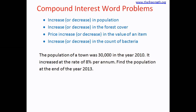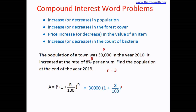So this is a good example of the application of the compound interest formula. The formula is: A equals P multiplied by (1 plus R over 100) to the power of N. Now looking at the problem, P is 30,000, R is 8, and N is 3 because we want to find the population at the end of 2013, and 2013 minus 2010 is 3 years.